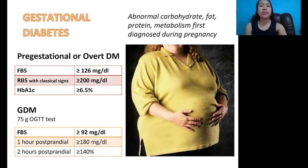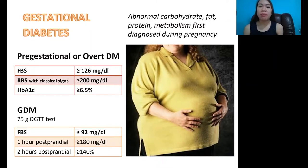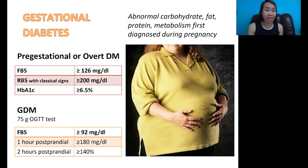We'll start with gestational diabetes. When we see the word 'gestational,' this pertains to pregnancy. So this is a condition of having diabetes mellitus in women who are pregnant. This is defined as abnormal carbohydrate, fat, and protein metabolism that is first diagnosed during pregnancy. It's called gestational diabetes because it was only first diagnosed when the woman was pregnant.